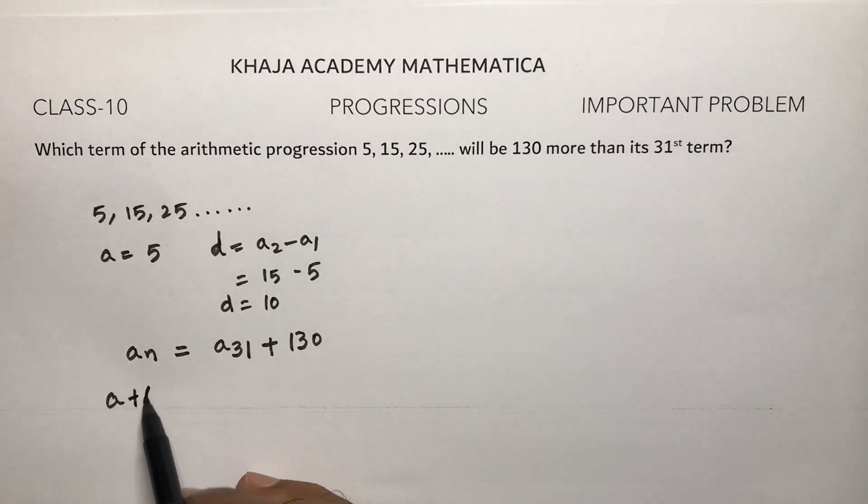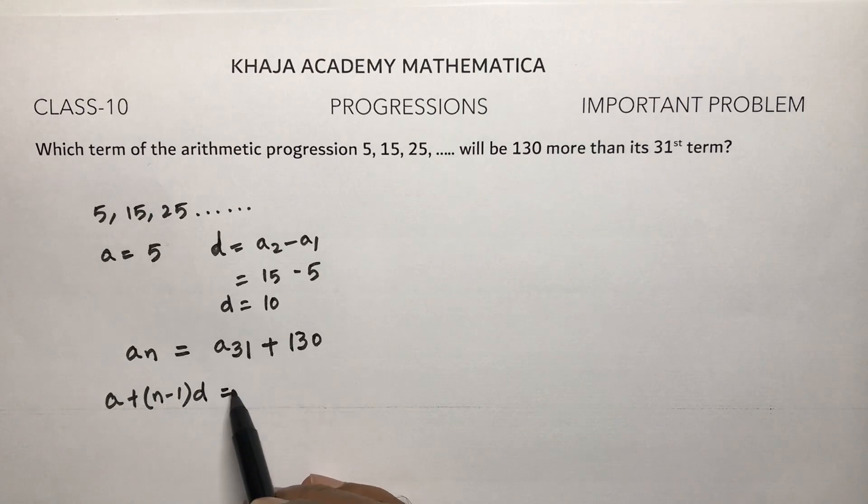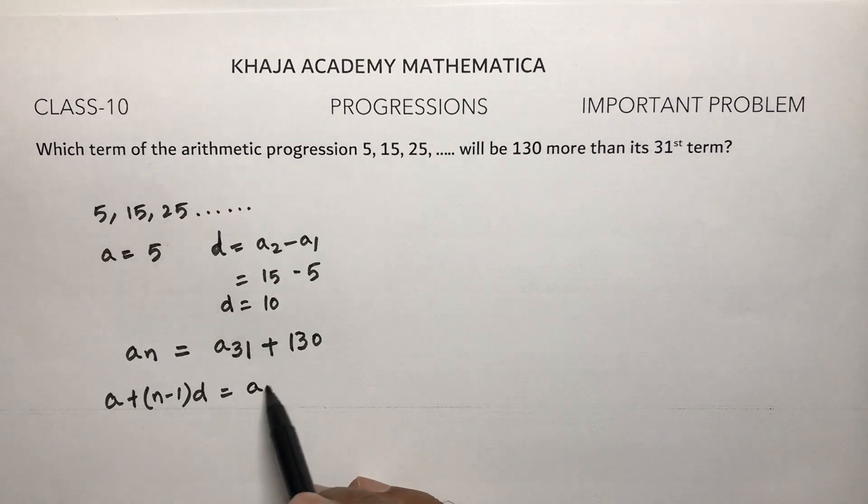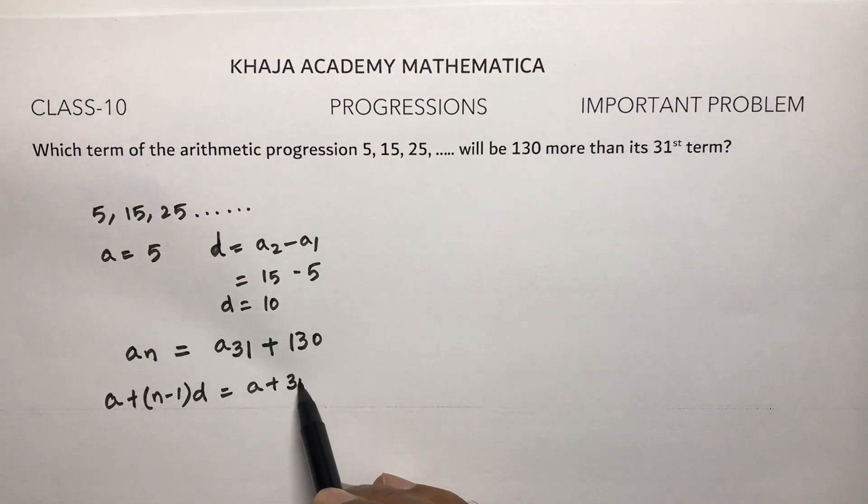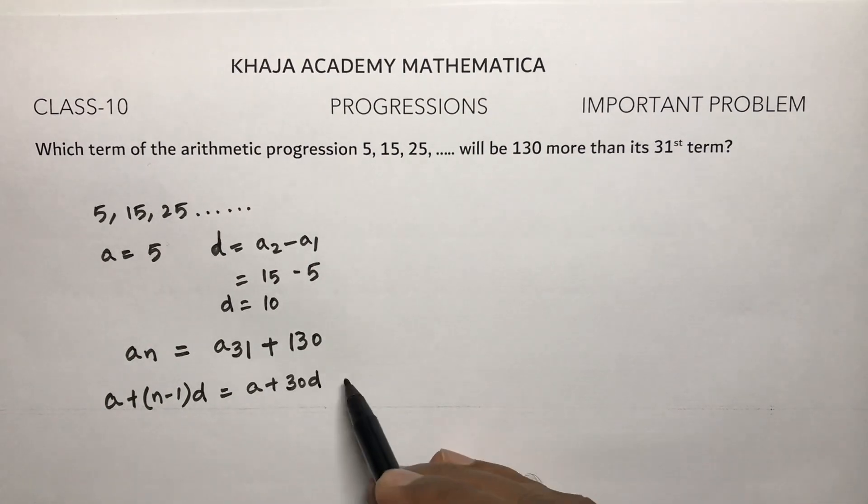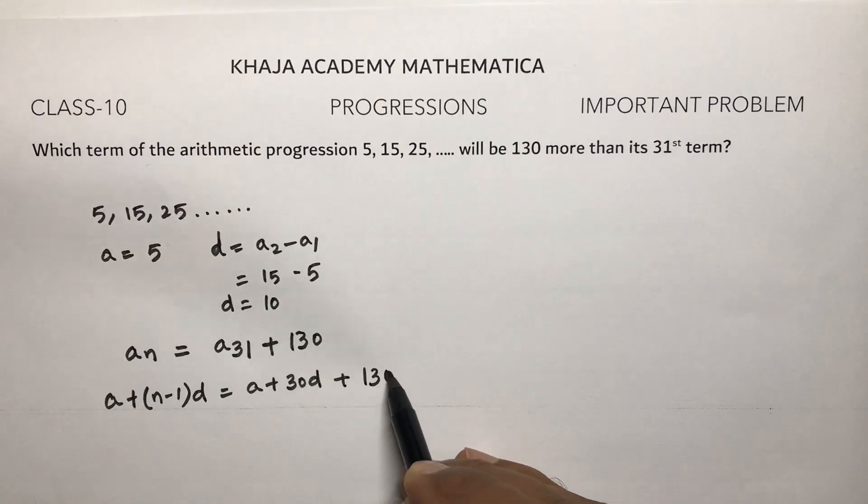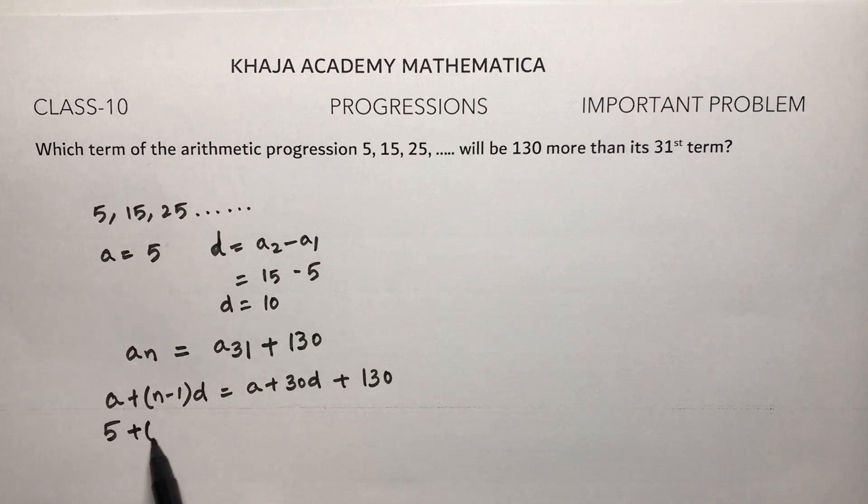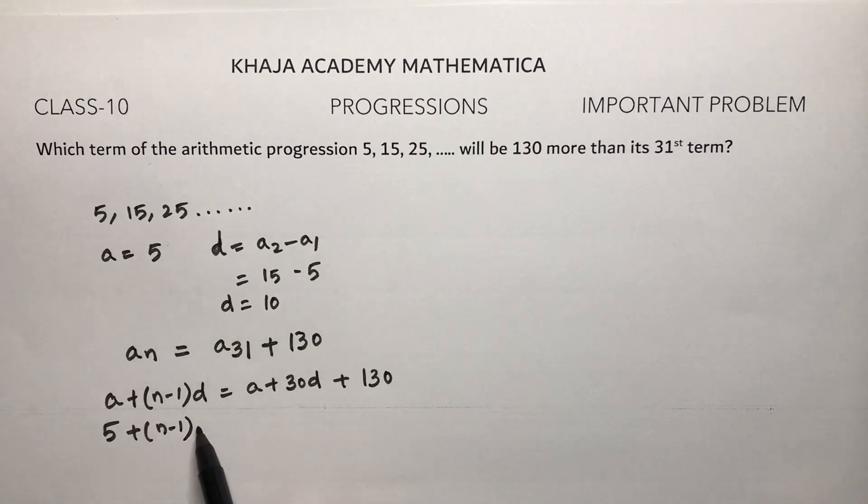We need to find n, which term. So aₙ equals a₃₁ plus 130, which is a plus 30d plus 130. Now substitute the values: a is 5 plus (n-1), d is 10, equals a is again 5 plus 30 times 10 plus 130.